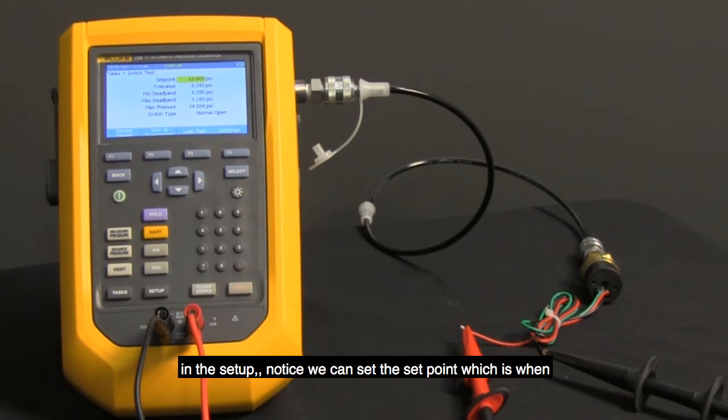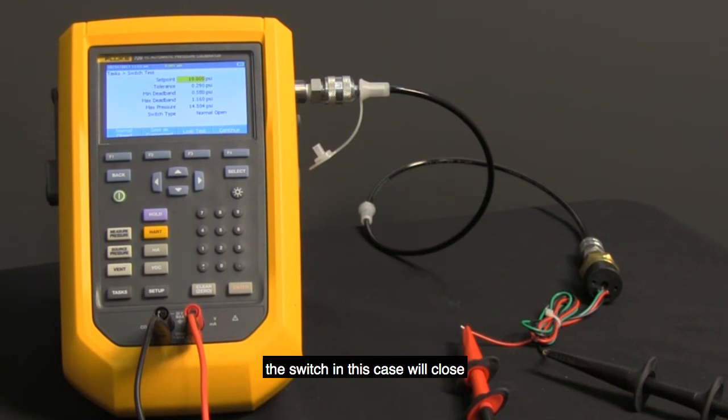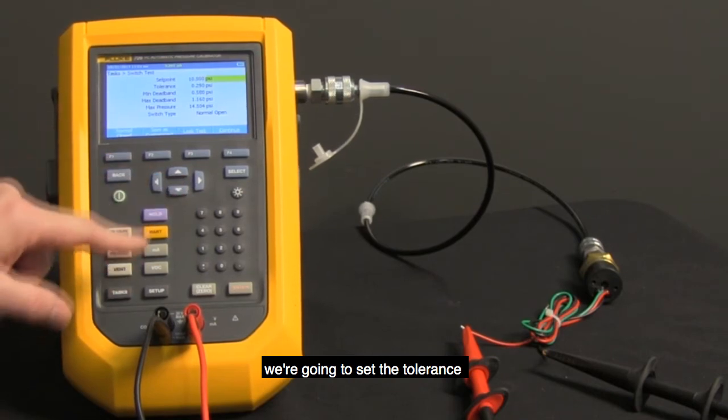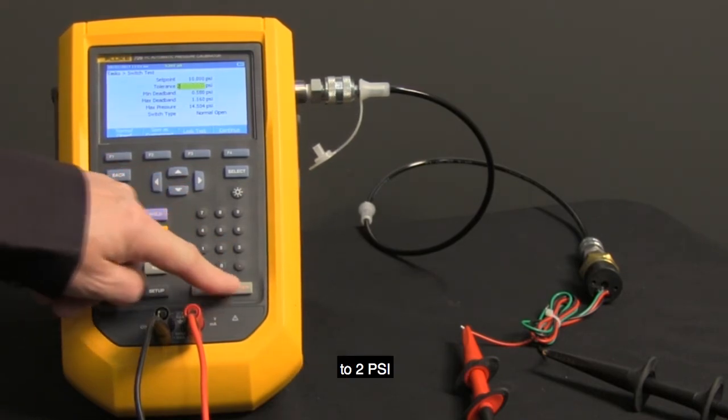In the setup, notice we can set the set point, which is when the switch in this case will close. So we've got that set for 10 psi. We're going to set the tolerance to 2 psi.